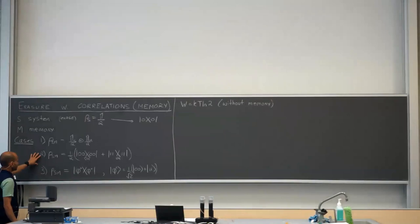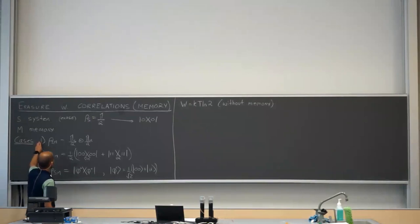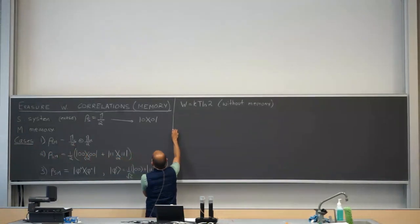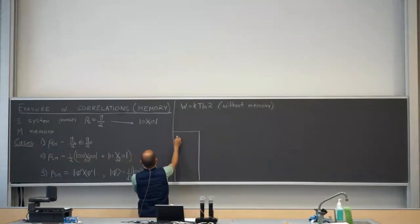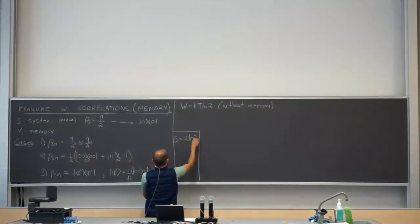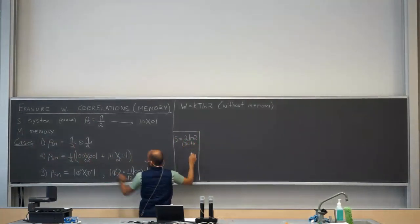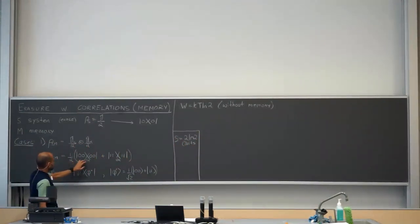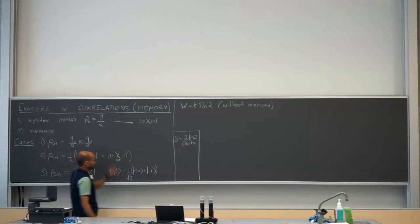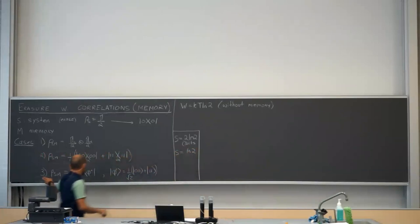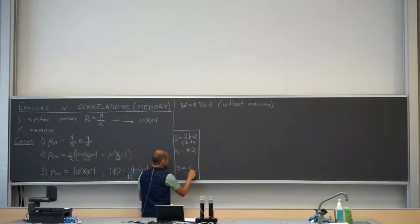One way of looking at this: in case one, the entropy of the joint state is 2 log 2 — two bits — because you have two maximally mixed states. In case two, the entropy is only one bit, log 2, because the joint state is a mixture of two equiprobable states. And finally in case three, I'm in a pure state, so the entropy is zero.